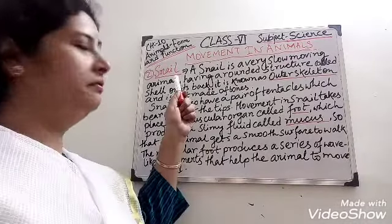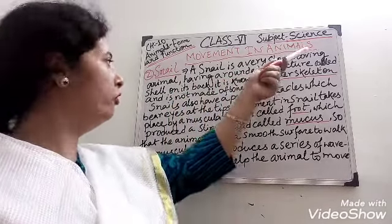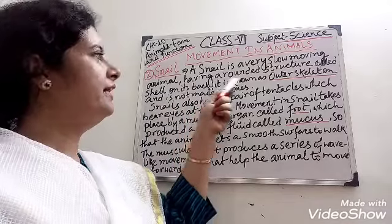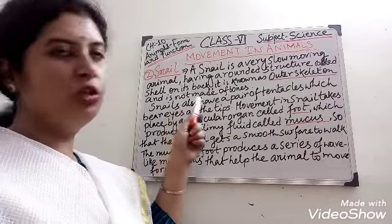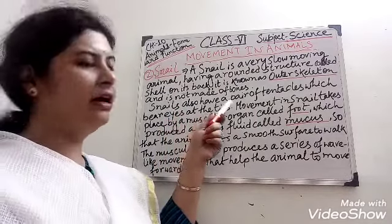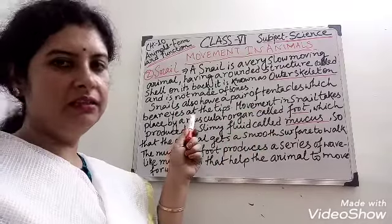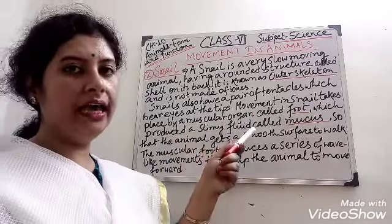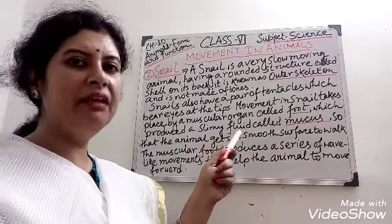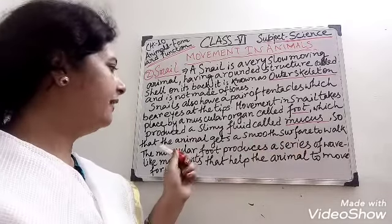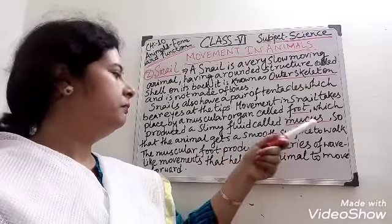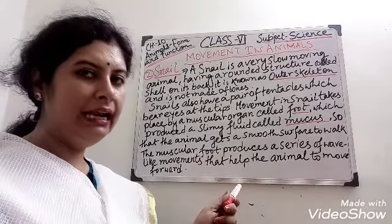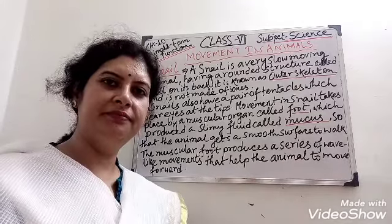Our next animal is the snail. A snail is a very slow-moving animal having a rounded structure called a shell on its back, known as an outer skeleton, and it is not made of bone. Snails also have a pair of tentacles which bear eyes at the tips. Movement in a snail takes place by a muscular organ called the foot, which produces a slimy fluid called mucus, giving the animal a smooth path. The muscular foot produces a series of wave-like movements that help the animal to move forward.